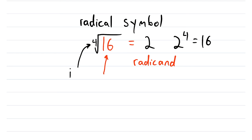And we call 4 the index. So again, this is the radical symbol. The quantity under the radical is the radicand. And this number that goes along with the radical symbol is the index. And when there is no index, we generally assume an index of 2, which refers to the square root.